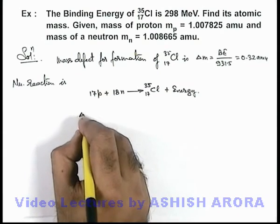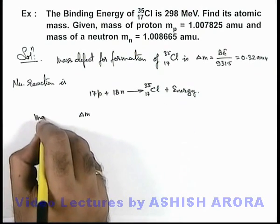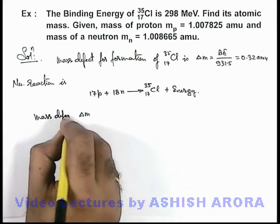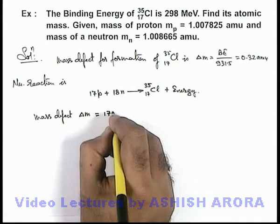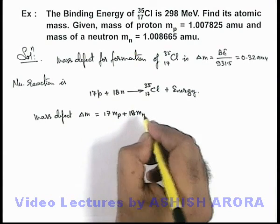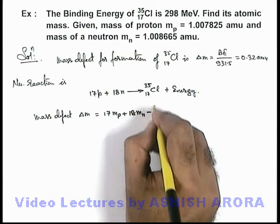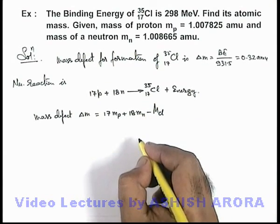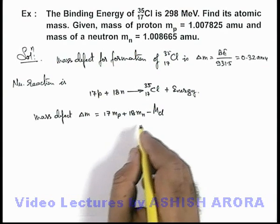In this situation we can directly write the mass defect will be 17 times mass of proton plus 18 times mass of neutron minus the mass of chlorine nucleus.